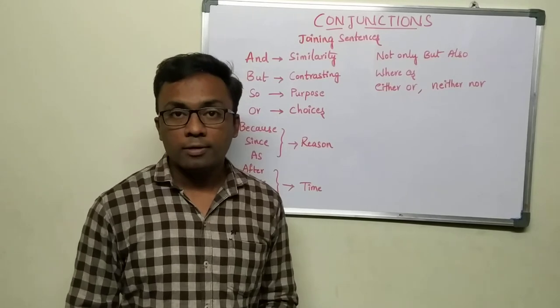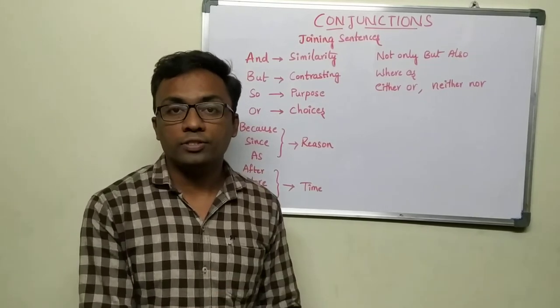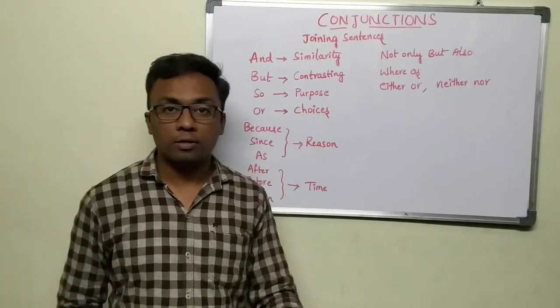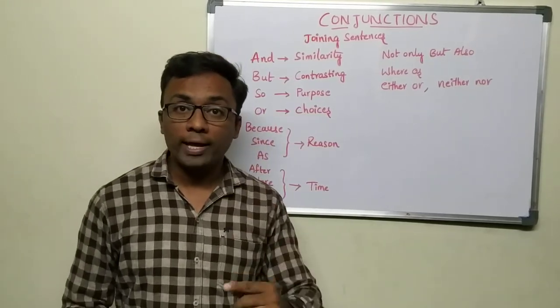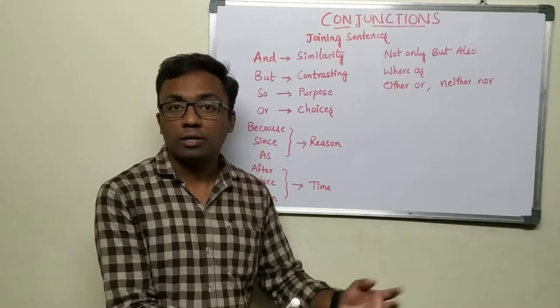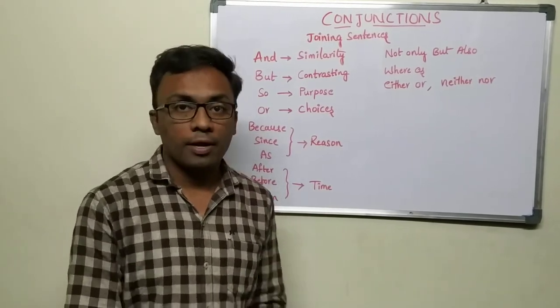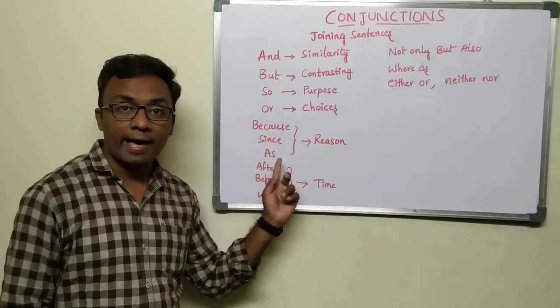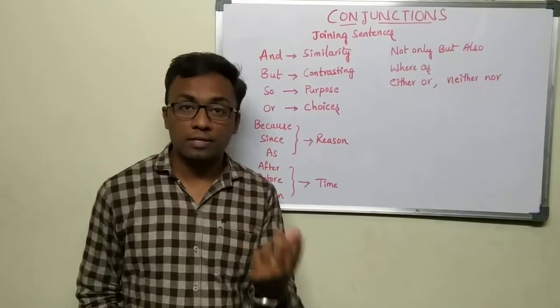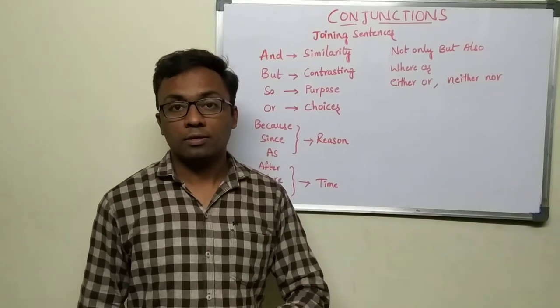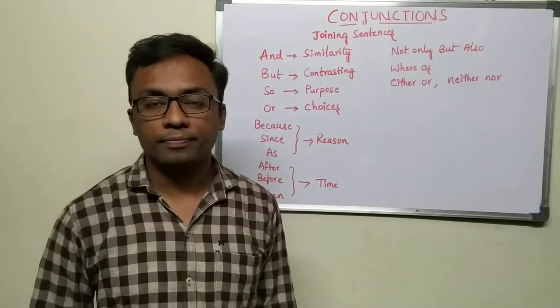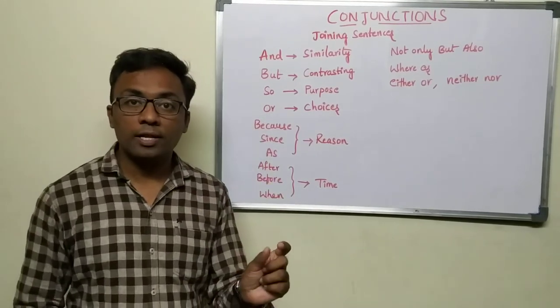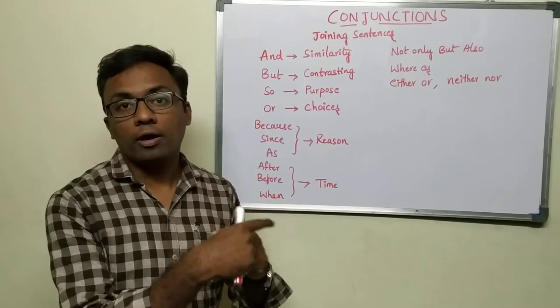'Or' is obviously choice: 'You come today or tomorrow' means you take a decision. Similarly, very important ones like 'because,' 'since,' and 'as' are all related to reason. 'I am late because the bus was late.' With all these conjunctions, you're basically combining one or two sentences.